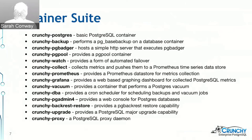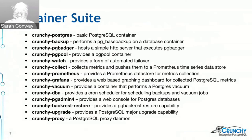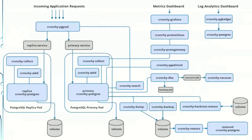crunchy-vacuum performs a Postgres vacuum — essentially the garbage collector of Postgres — to reclaim storage space. crunchy-dba has a cron scheduler functionality for DBAs. pgAdmin 4 is offered in container form to provide GUI management access for Postgres databases. backrest-restore uses the pgBackRest project to back up and restore databases. The upgrade container hosts the Postgres upgrade utility for major version upgrades. Finally, crunchy-proxy is a small Postgres-aware proxy daemon that can route SQL statements to the appropriate Postgres backend within a streaming replication cluster.